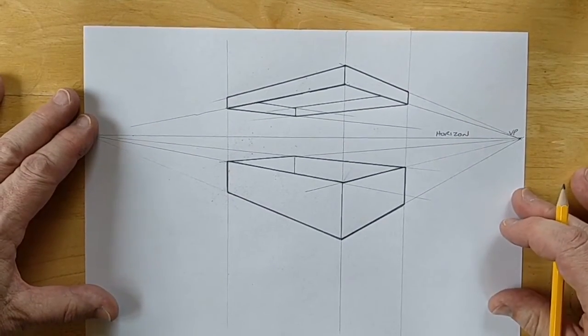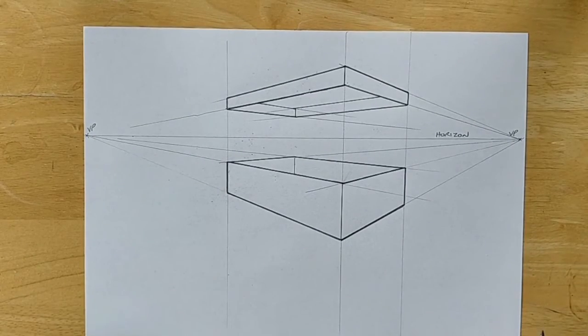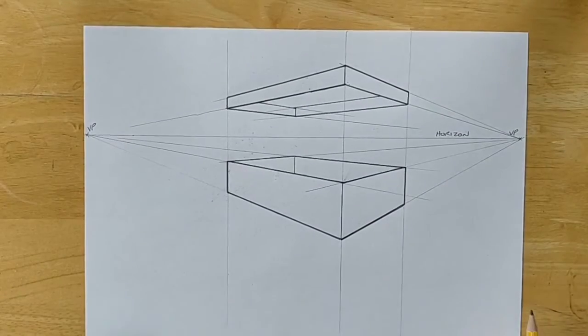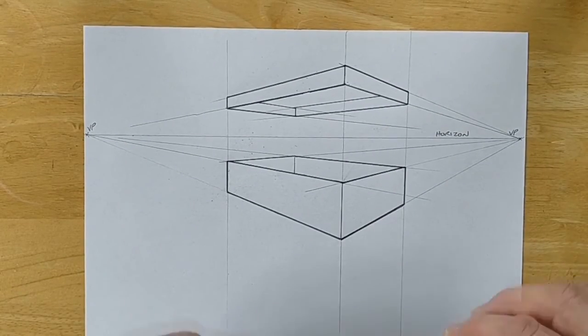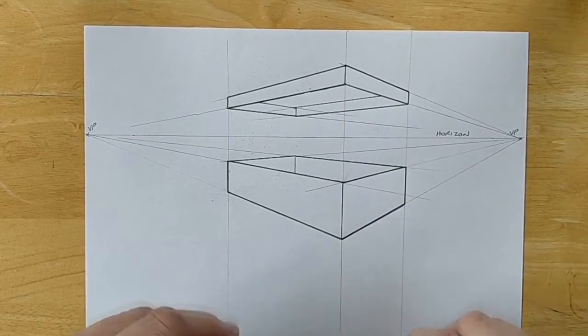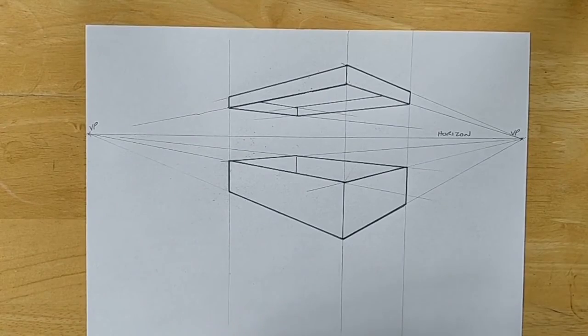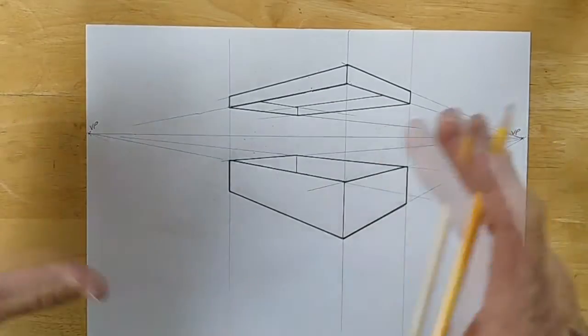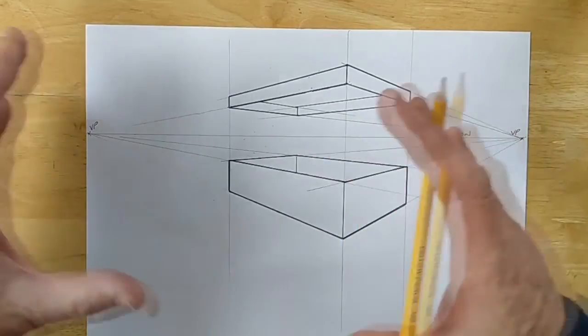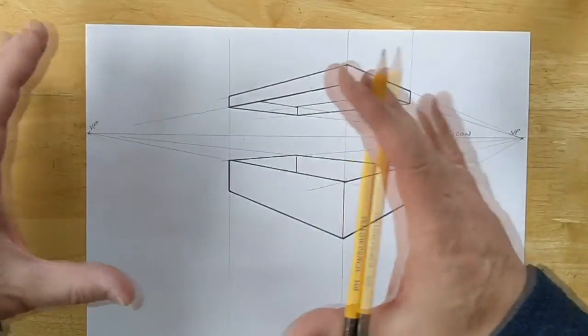There hopefully you can see that that now looks like a nice three dimensional box with a lid floating above it. We can see that if something's above the horizon we can see underneath it, if something's below the horizon we can see the top of it. So where you position your drawing on the page will determine the view that you get. You can imagine that moving around as the viewpoint moves.